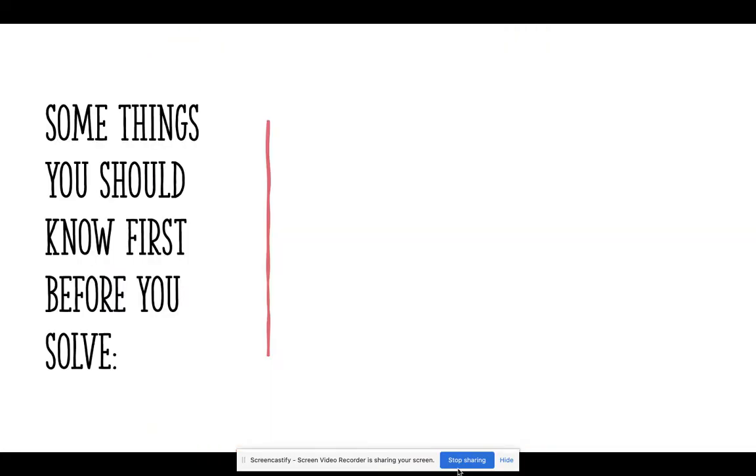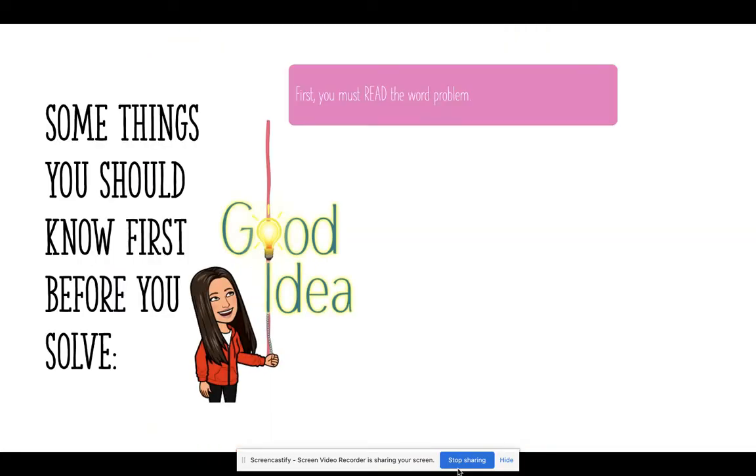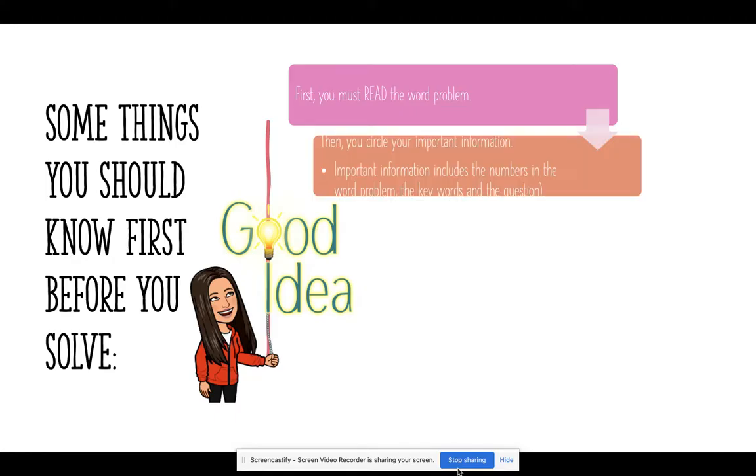Some things you should know first before you solve. First, you must read the word problem. Then, you circle your important information. Your important information includes the numbers in the word problem, the keywords, and the question.